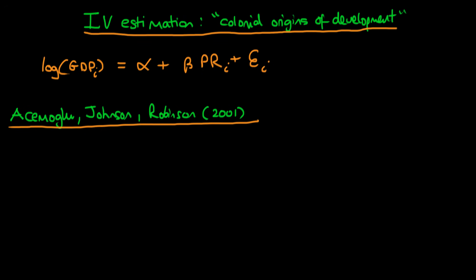In this video I want to provide a final example of how IV estimators can be used. The example we're going to be concerned with is how do institutions affect a country's level of economic development. So we have on our left-hand side we're trying to explain variations in GDP or log of GDP, and on the right-hand side we have some measure of institutions.